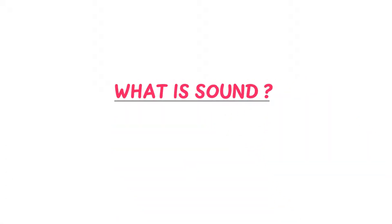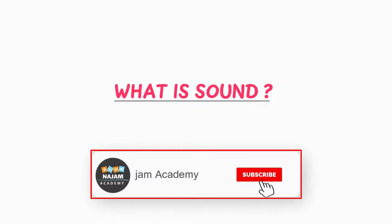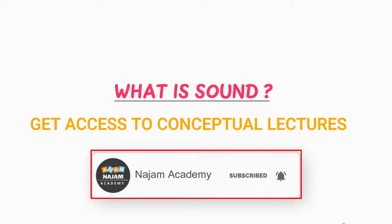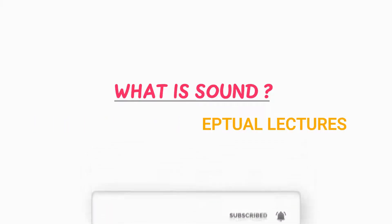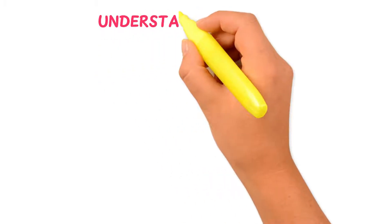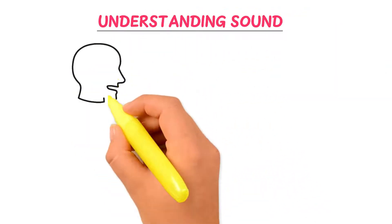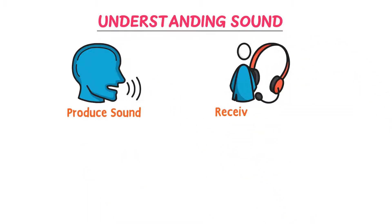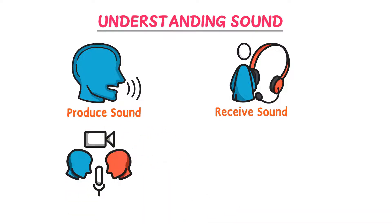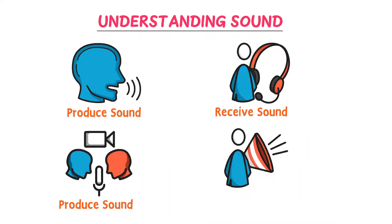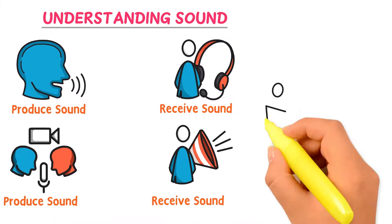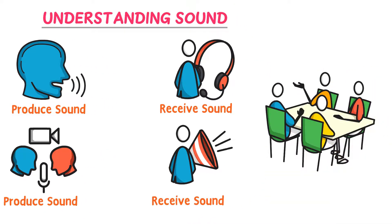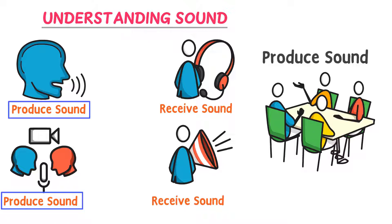What is sound? Firstly, understanding sound. For example, when you speak you produce sound. When you listen to music you receive sound. When you sing you produce sound. When you listen to an announcement you receive sound. During a meeting you speak, so you produce sound. From all these examples we learn that either we produce sound or we receive sound.